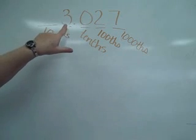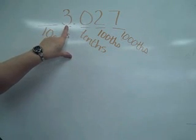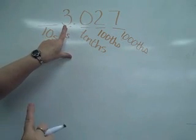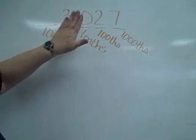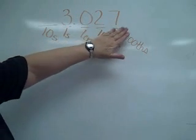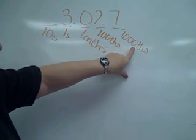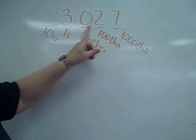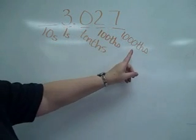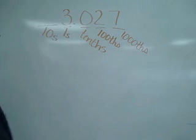So now to read this number, you read the number in front of the decimal — 3. And then read the number behind it — 27 — and then your place value. So it's 3 and 27 thousandths.